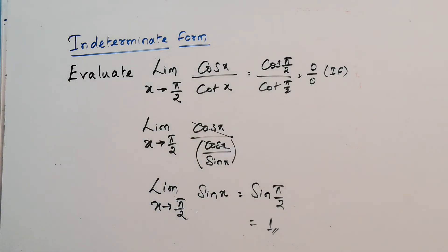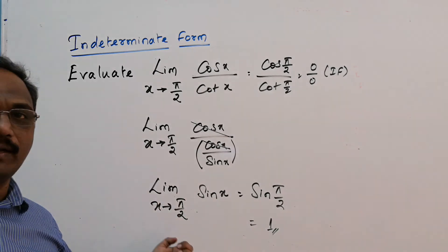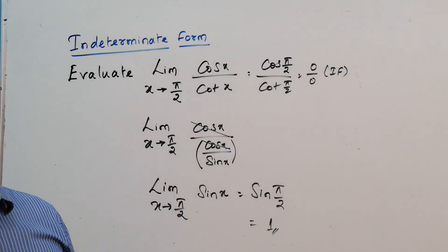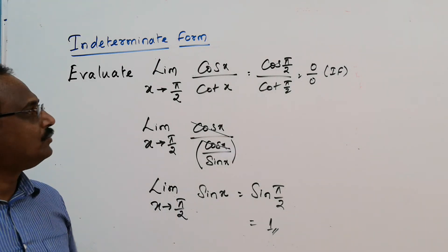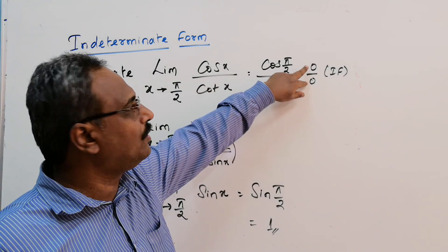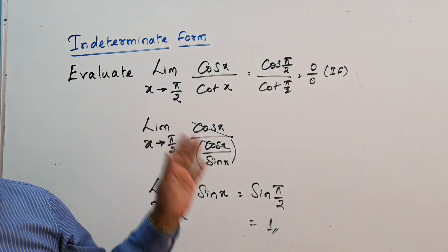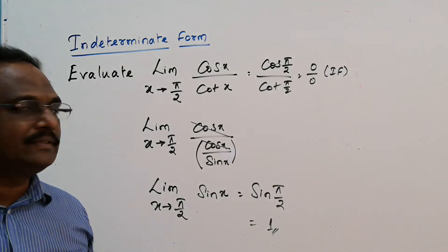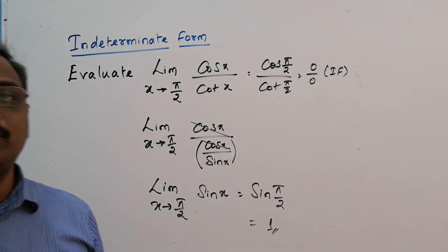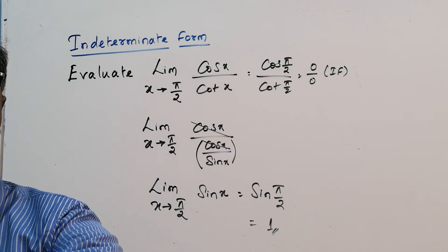So even for trigonometric ratios we can evaluate, simplify, and find the limits. In this video we were discussing 0 by 0 indeterminate form. Other indeterminate forms will be discussed in the next video. Thank you all.